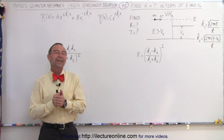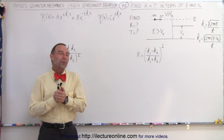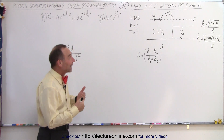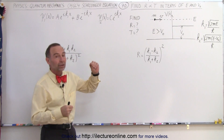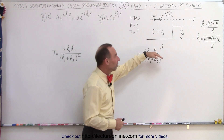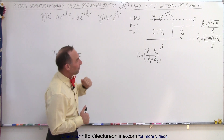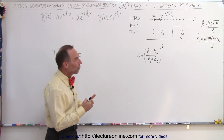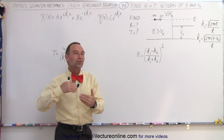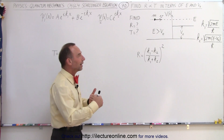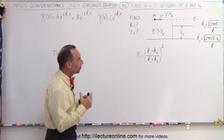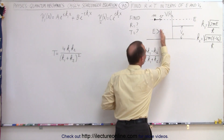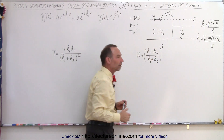Welcome to ElectronLine. We're now ready to calculate the transmission and reflection coefficients in the case of a small particle incident upon a potential step. We're going to deal with the situation where the energy of the particle is greater than the potential of the step, such that part of it is going to be reflected and part of it is going to be transmitted.